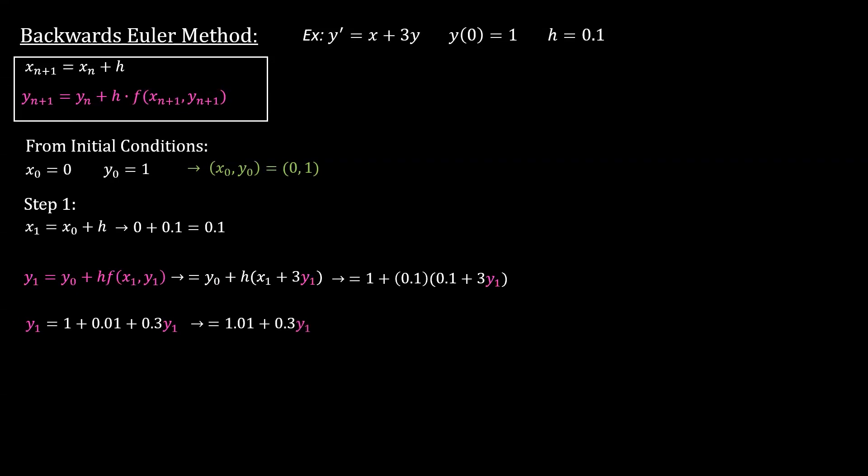We can combine the numbers, so y1 equals 1.01 plus 0.3y1. Let's set the 0.3y1 to the other side to combine it with the other y1. We have y1 minus 0.3y1 equals 1.01, so we have 1y1 minus 0.3, that equals 0.7y1. If you factor out the y1, you get 1 minus 0.3 which gives you 0.7.